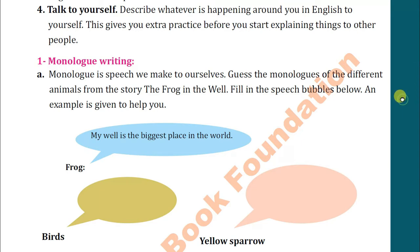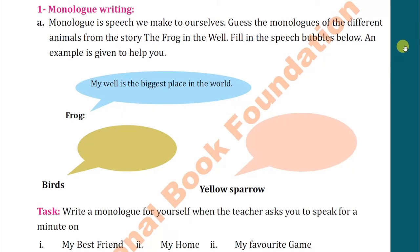Then we come to the next point: monologue writing. What is the meaning of monologue? It is self-speaking — the speech we make to ourselves. Guess the monologues of the different animals from the story 'The Frog in the Well.' Fill in the speech bubbles below. An example is given: in the first bubble, the frog says 'My well is the biggest place in the world' or 'My well is the most beautiful place in the world.'